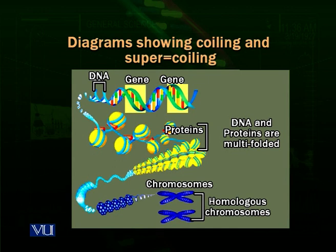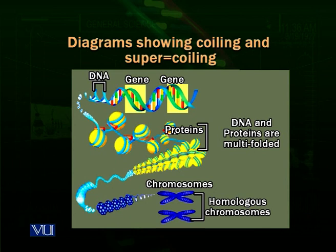If we open these coils further, we can see in yellow the flower-like structures — these are called solenoids. These are lengths of DNA wound around or wrapped around the histone protein.